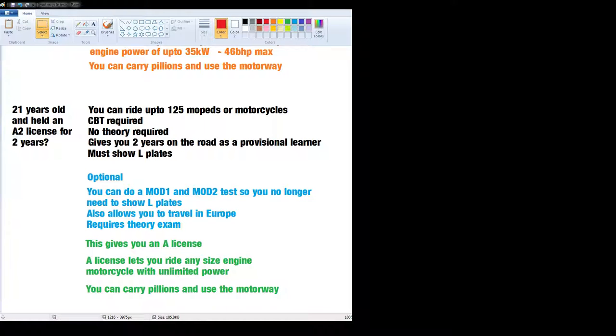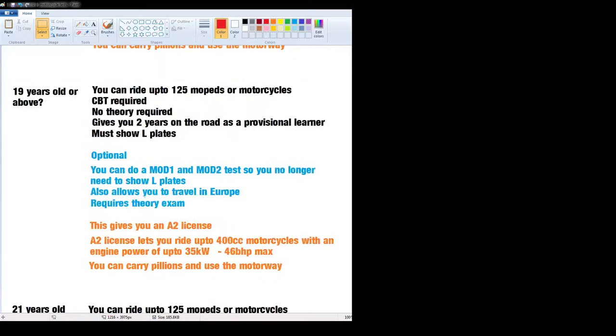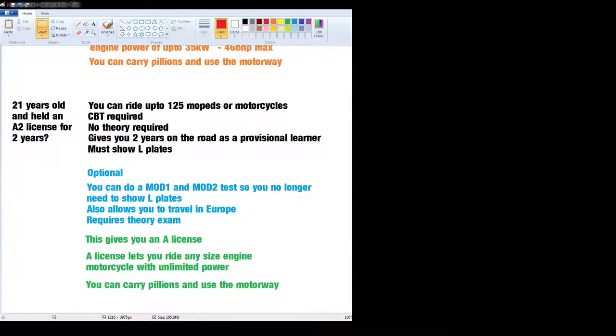If you're 21 years old and you've held your A2 license, which you got at 19, for two years, you can do a Mod 1 and Mod 2 test and this will give you an A license. An A license lets you ride any size engine motorcycle with unlimited power. This is basically your full license. You can carry pillions, use the motorway, go to Europe, do whatever.